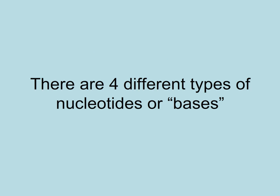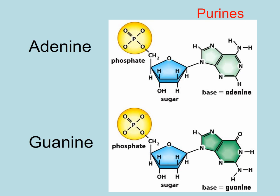There are four different types of nucleotides based on what kind of nitrogenous base they have. We commonly call different nucleotides bases. Adenine and guanine have nitrogenous bases that are purines. Purines have two rings. Adenine has no oxygen attached to its rings, while guanine does.